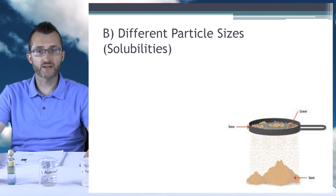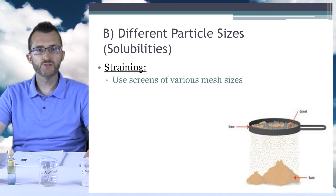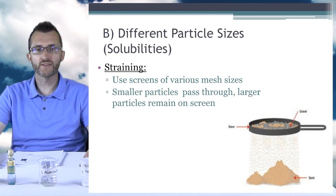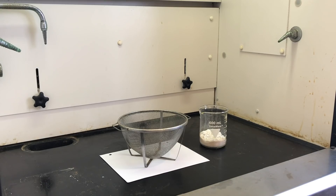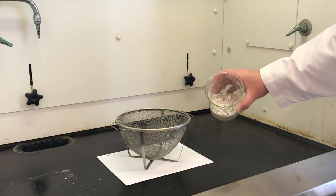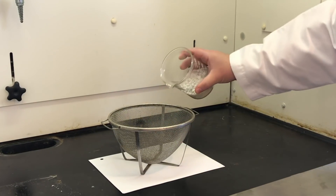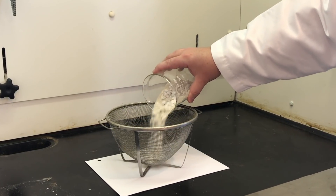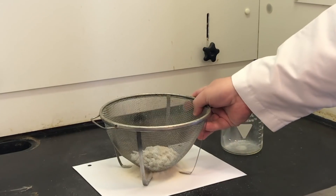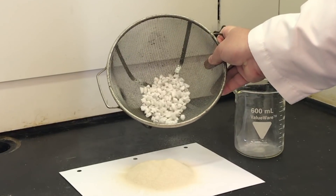Separating mixtures based on different particle sizes or solubilities — straining. Use screens of various mesh sizes. Smaller particles pass through while the larger particles remain on the screen. So as you can see, we have a mixture of marble chips and sand grains. We pour it through this sifter, and the small grains of sand will go through the sifting medium while the large marble chips get caught up. A little bit of shaking to get those sand grains out, and we have now separated our mixture.